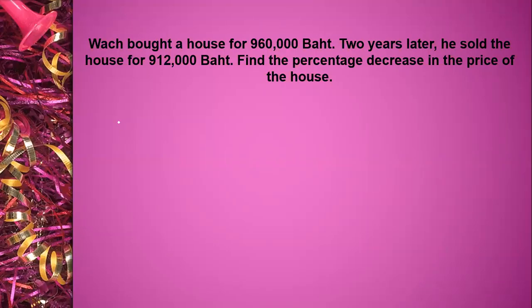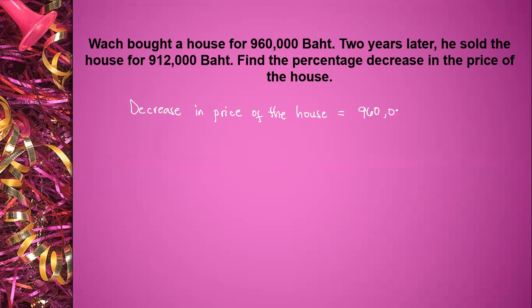Quack bought a house for 960,000 baht. Two years later, he sold the house for 912,000 baht. Find the percentage decrease in the price of the house. So decrease in price of the house is equal to 960,000 baht minus 912,000 baht, is equal to 48,000 baht.